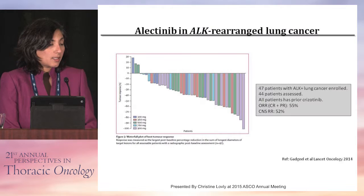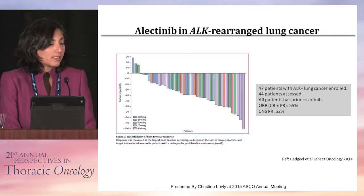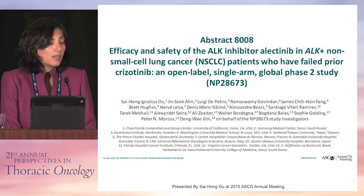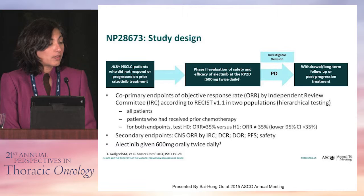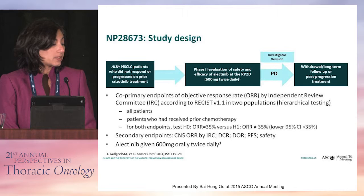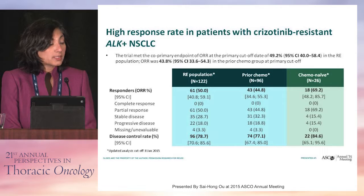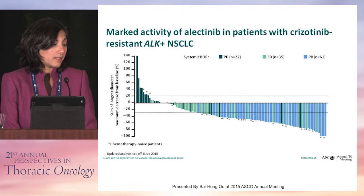Moving on with alectinib: the dose originally studied in the Japanese study differs from the dose in North American data. In the North American trial, 47 patients were treated, all with prior crizotinib, and the response rate was 55%, with a CNS response rate of 52%. Dr. Uhl did a global phase 2 study where patients were treated at a dose of 600 milligrams twice a day, and the response rate was 61% — about 69% in patients who were chemotherapy-naive.